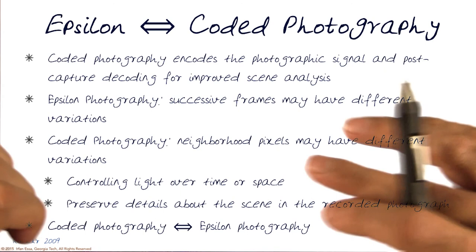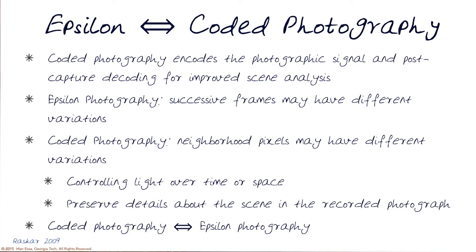These are just labels that we're coming up with to help us define the space of different types of photography — concepts related to computational photography. They may have overlap between both of them, and at the end of the day, we're trying to figure out the best possible way of capturing an image that we can actually render differently.